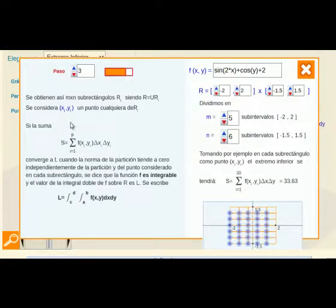Esta suma en el caso en el que converja cuando la norma de la partición tiende a 0 y cuando esta convergencia no depende del punto elegido ni de cómo se haya realizado la partición da lugar a la integral doble de la función f de x y en el intervalo a b por c d.